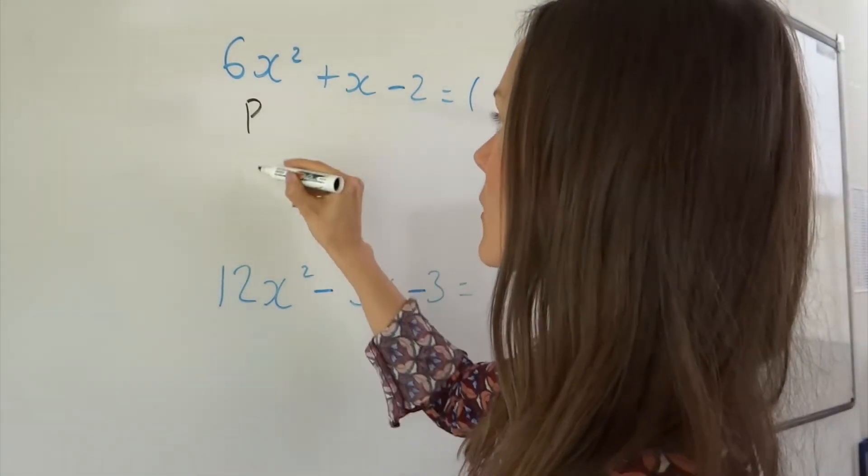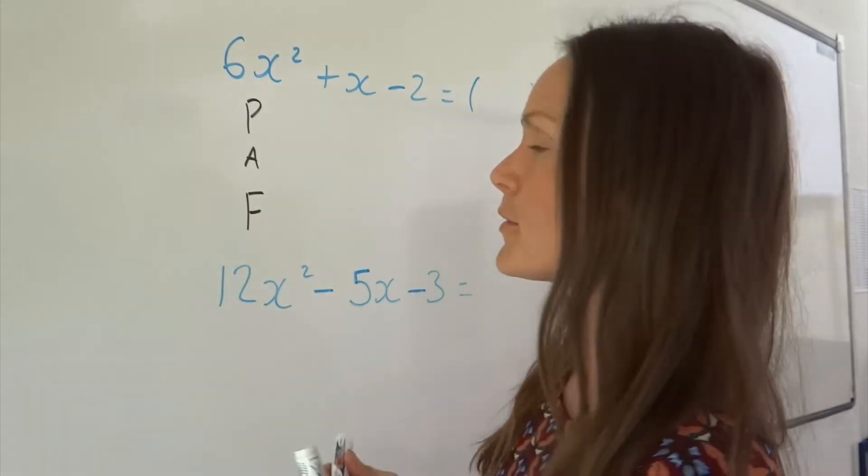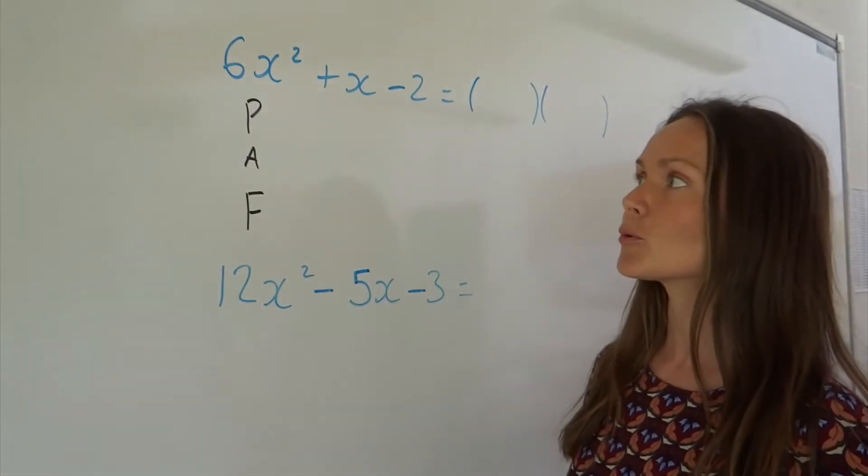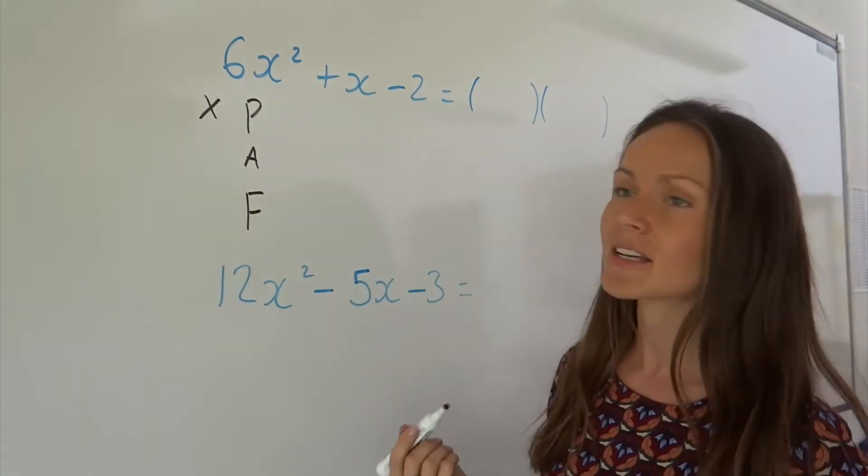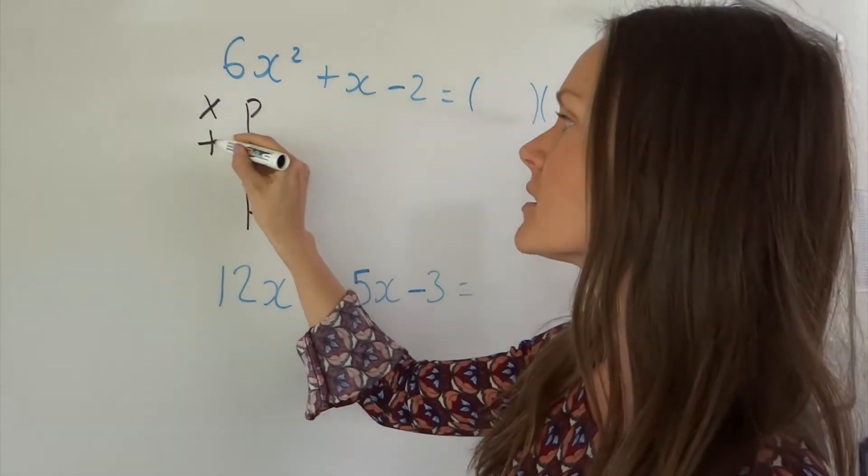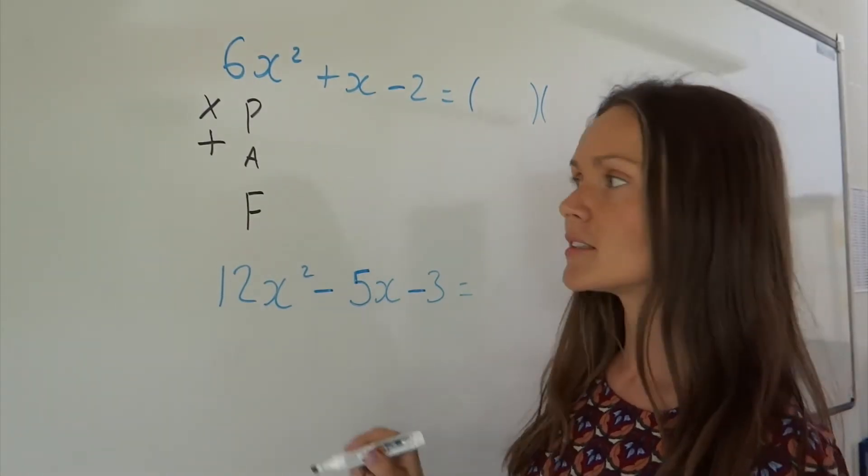In this method PAF, P stands for product, and remember product means multiply. A stands for addition, which is plus, and F stands for factors.